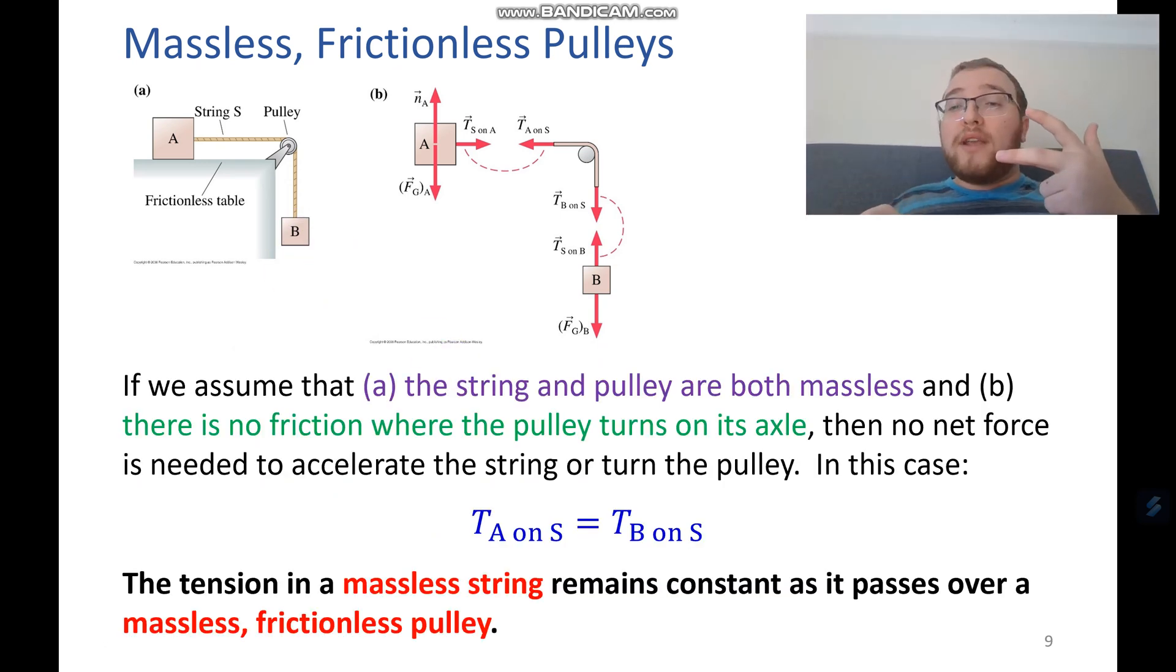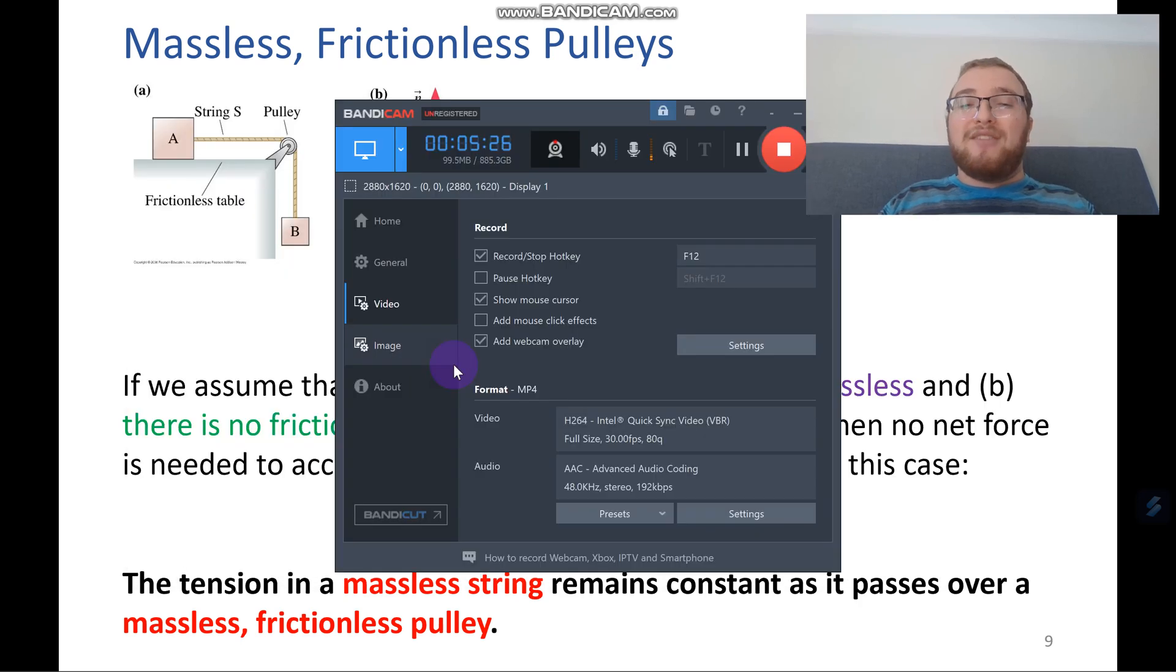So again, we can treat all three of these situations the same way: by contact forces, two boxes pulling on each other, and an Atwood machine with gravity. We solve them all the same way, by using Newton's third law and action-reaction pairs to solve for the tension or acceleration or whatever we need. Thank you.